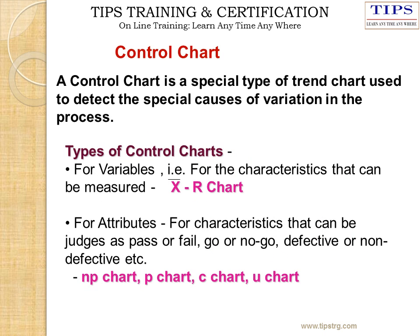The next tool is the Control Chart — a special type of trend chart used to detect special causes of variation in the process. There are two types: variable charts, for which the X-R chart or X-S chart is used; and attribute charts, for which there are four types: NP chart, P chart, C chart, and U chart.